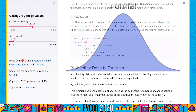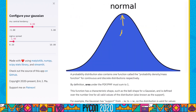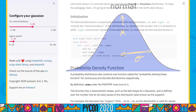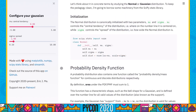We know that the normal distribution is defined by two parameters: mu and sigma. Mu canonically represents the central tendency of the Gaussian — where the bulk of the probability distribution is centered — and sigma controls the spread of the Gaussian, or how wide or narrow it is. For Gaussians, mu can take any value from negative infinity to positive infinity, while sigma must be a real number.